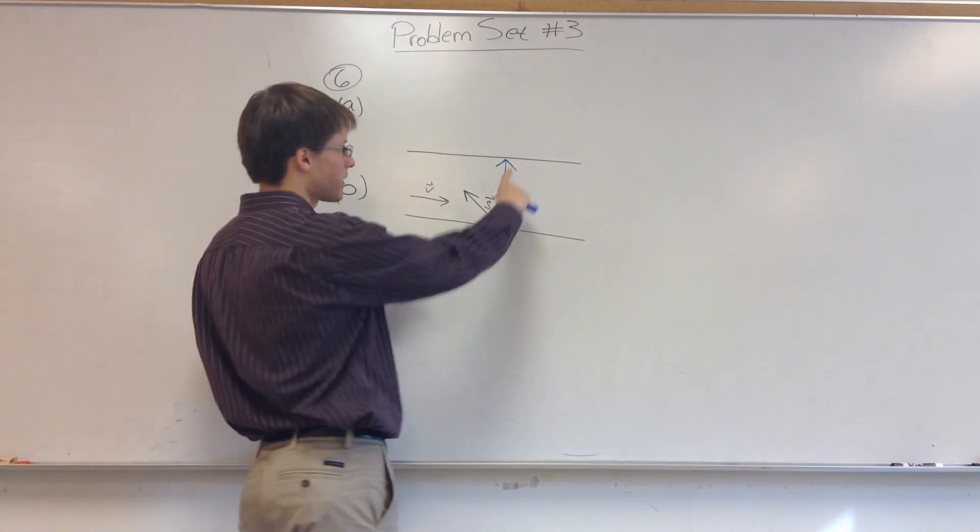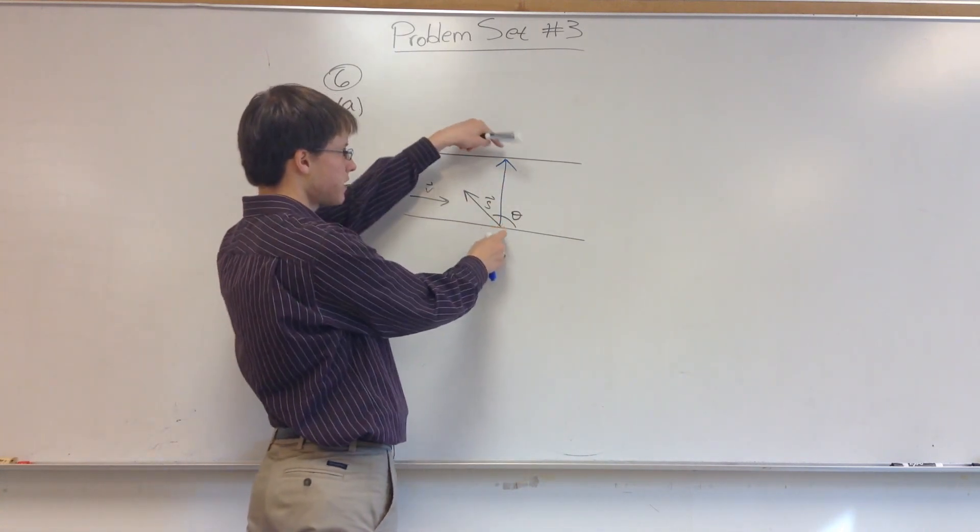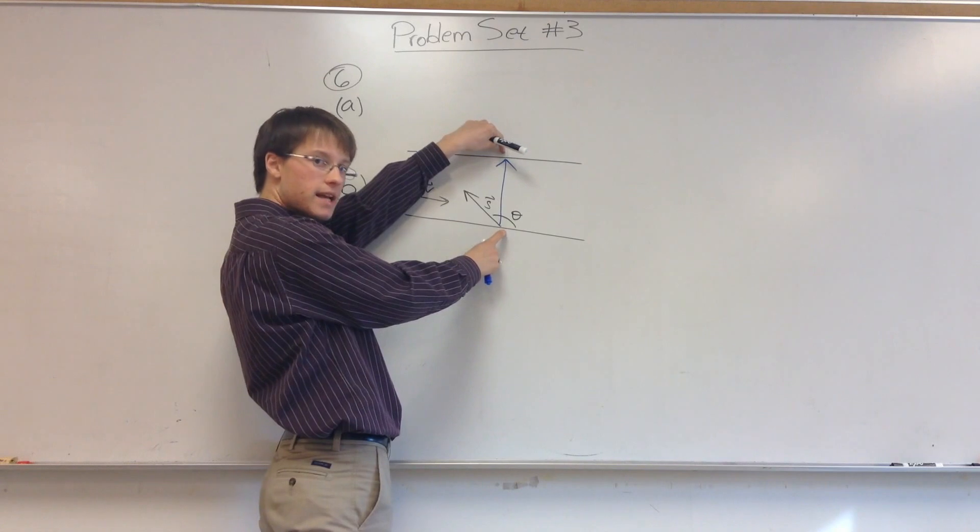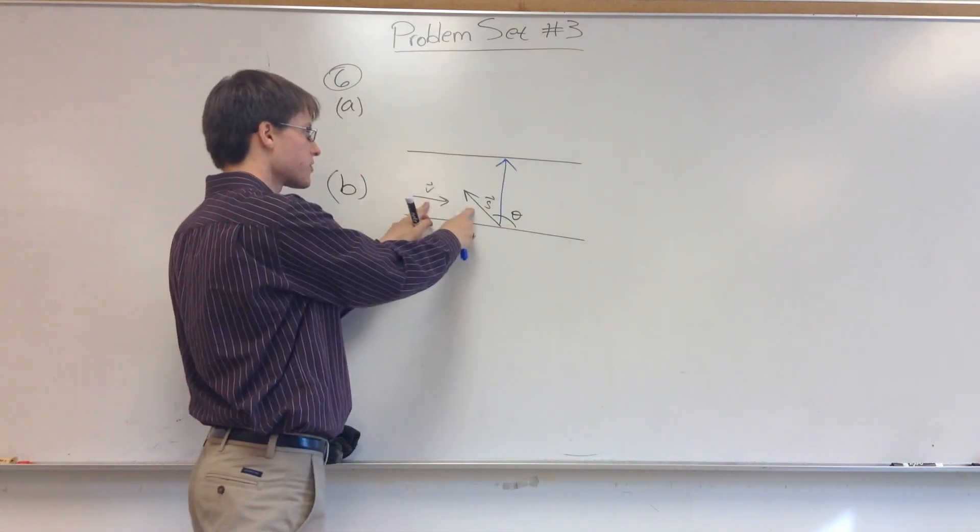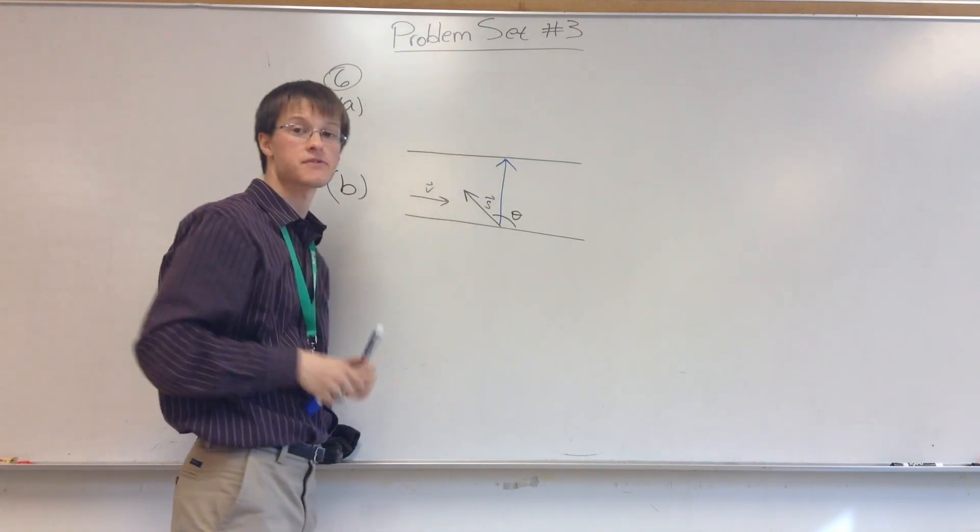And indeed, what we're trying to do when we get this vector is this vector has only a Y component. It has no X component. So what you want is for the X components of these two vectors to cancel out.